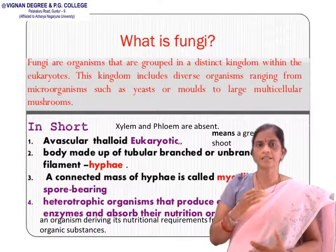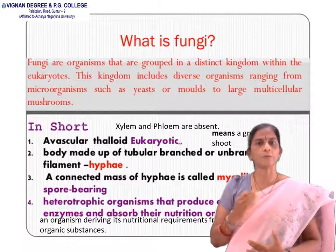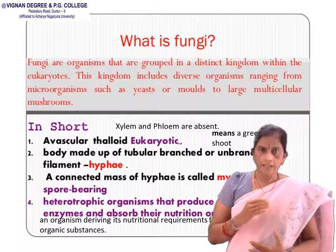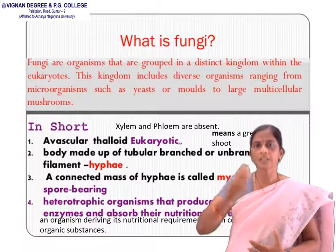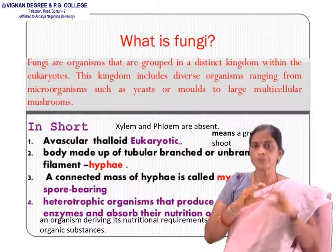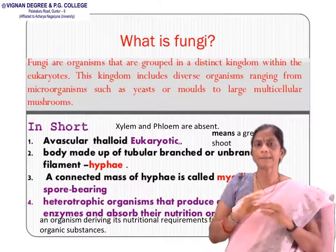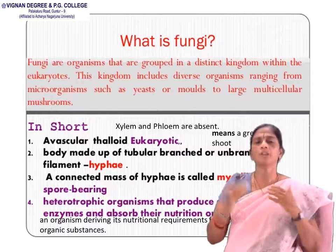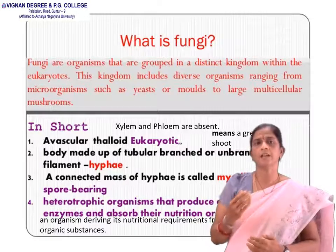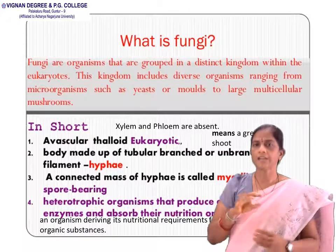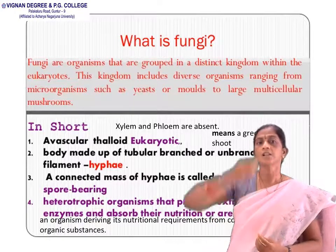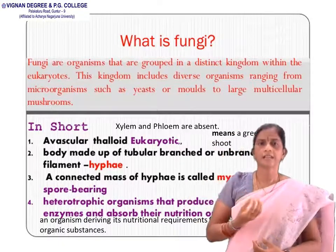Avascular means which does not consist of xylem and phloem — xylem and phloem are absent in fungi. Thalloid means the body is made up of tubular, branched or unbranched filaments which we call hyphae. A connected mass of hyphae is called mycelia. Mycelia are spore-bearing structures consisting of spores.